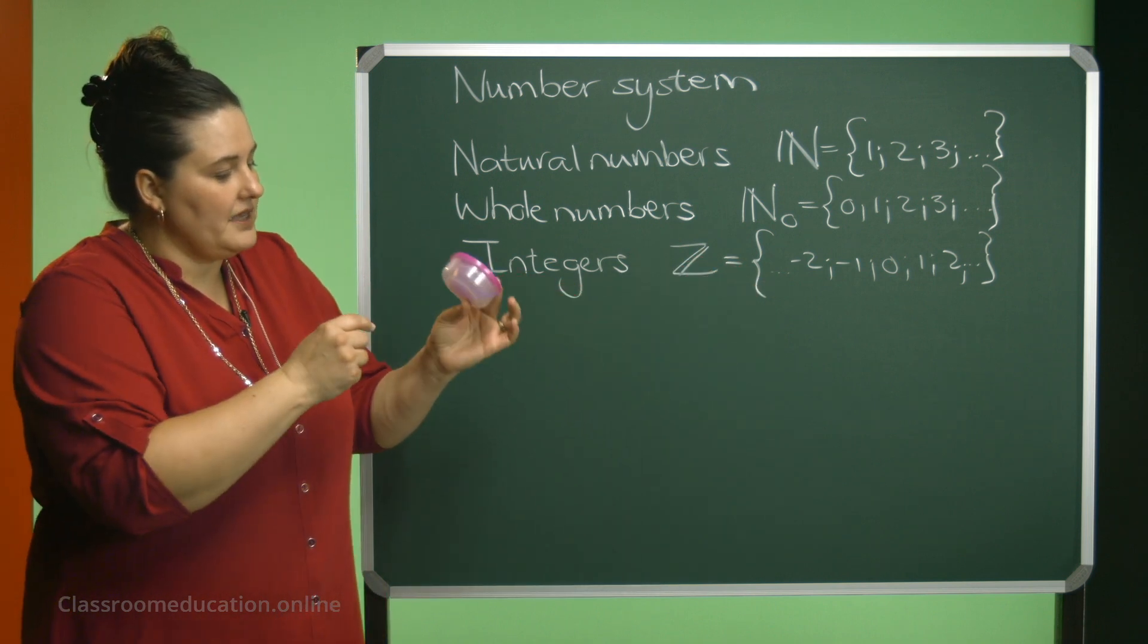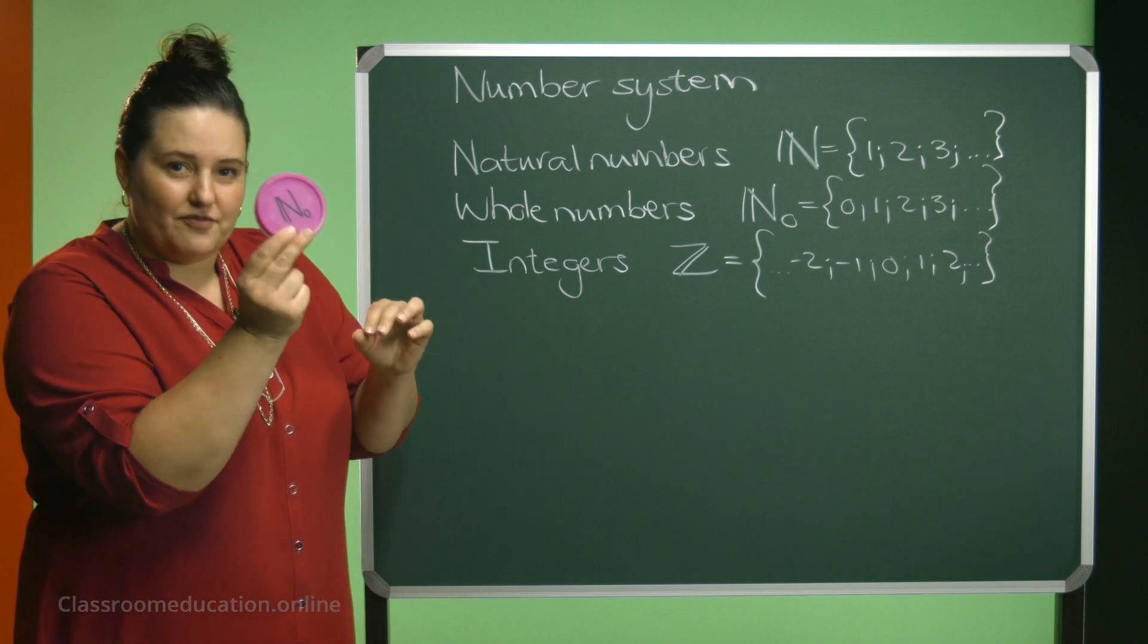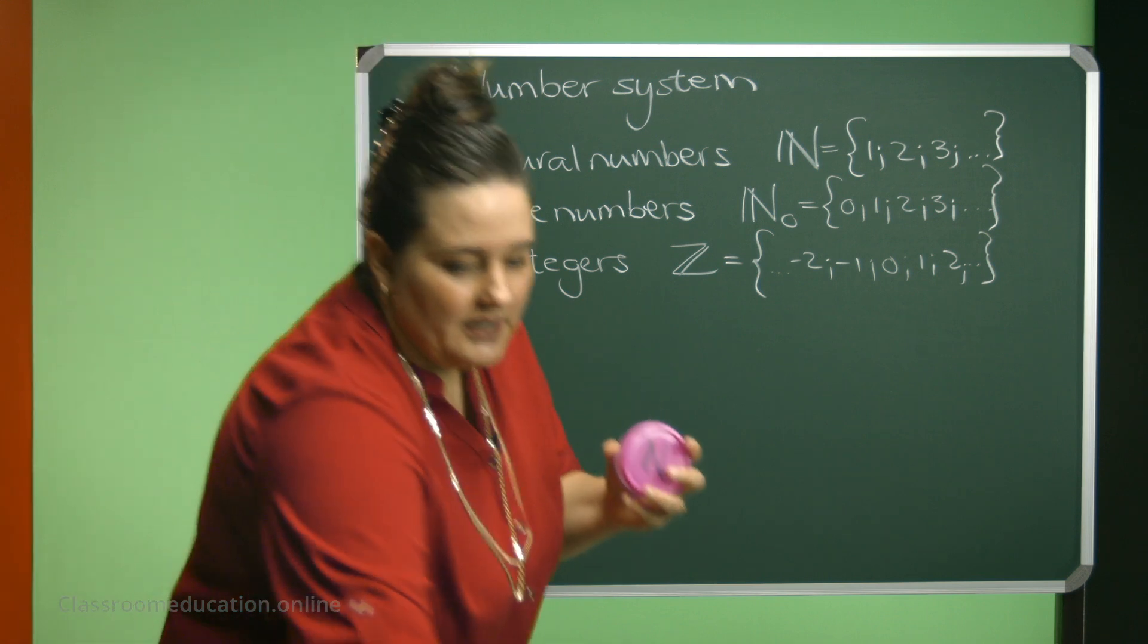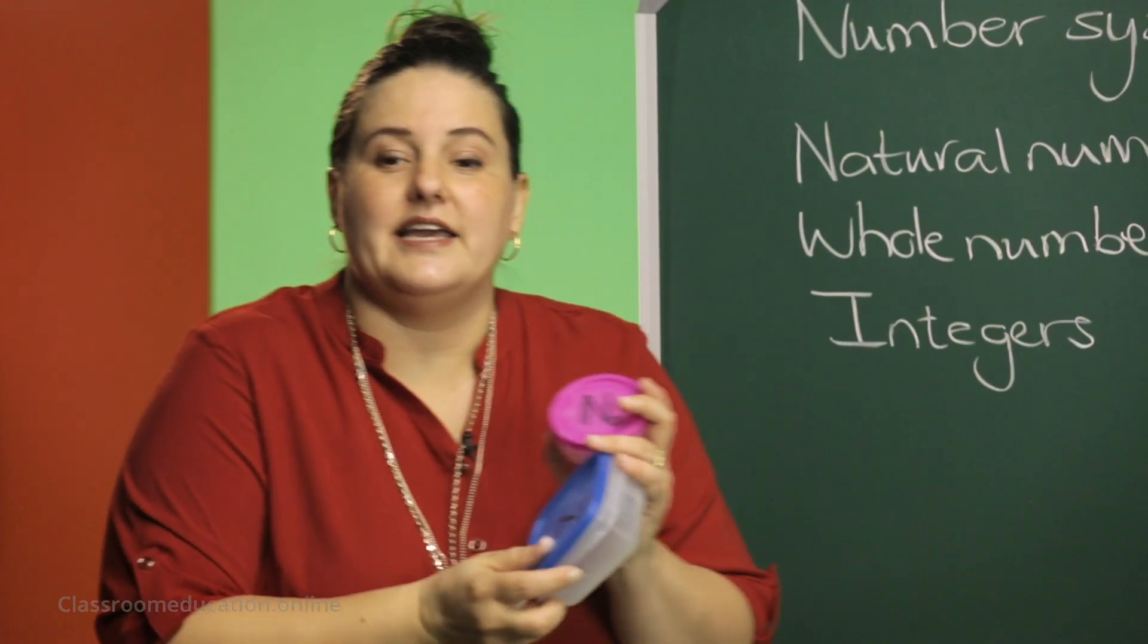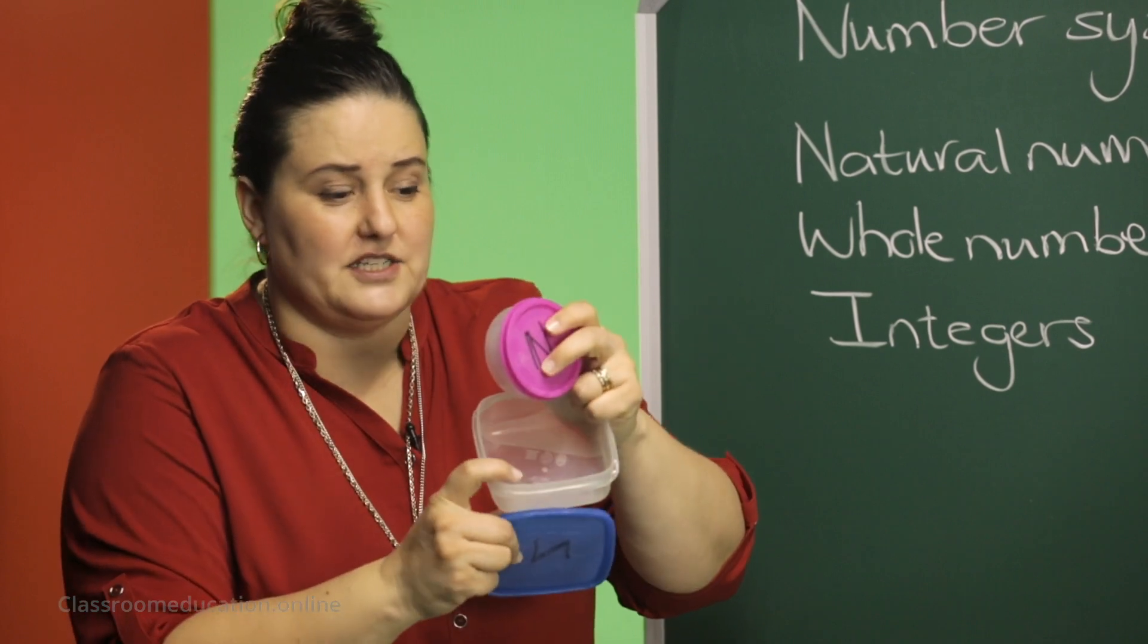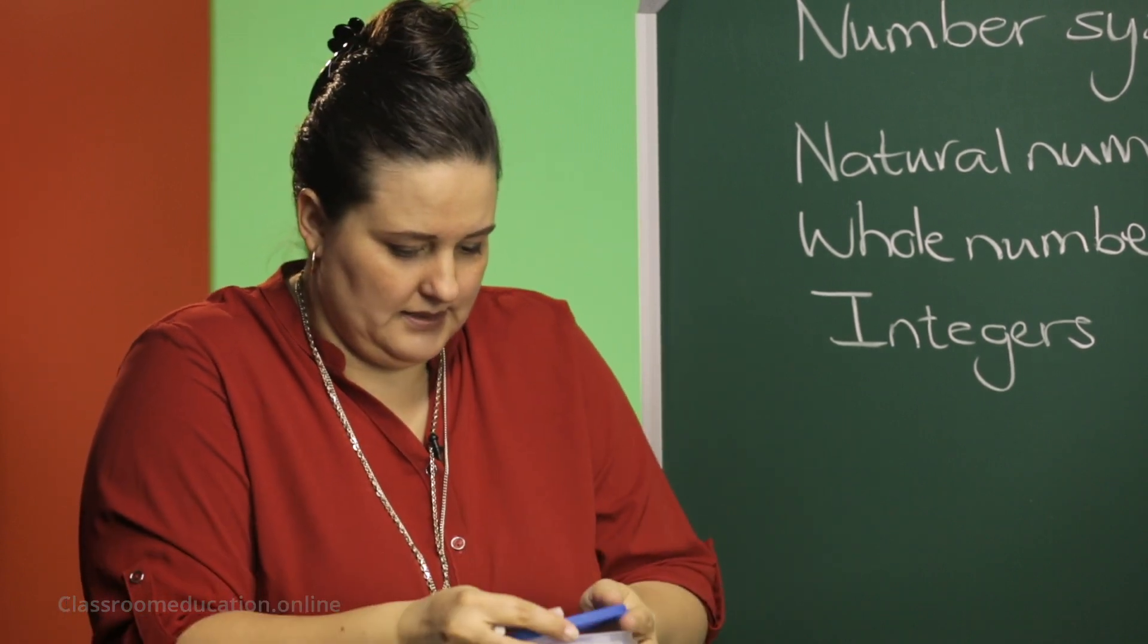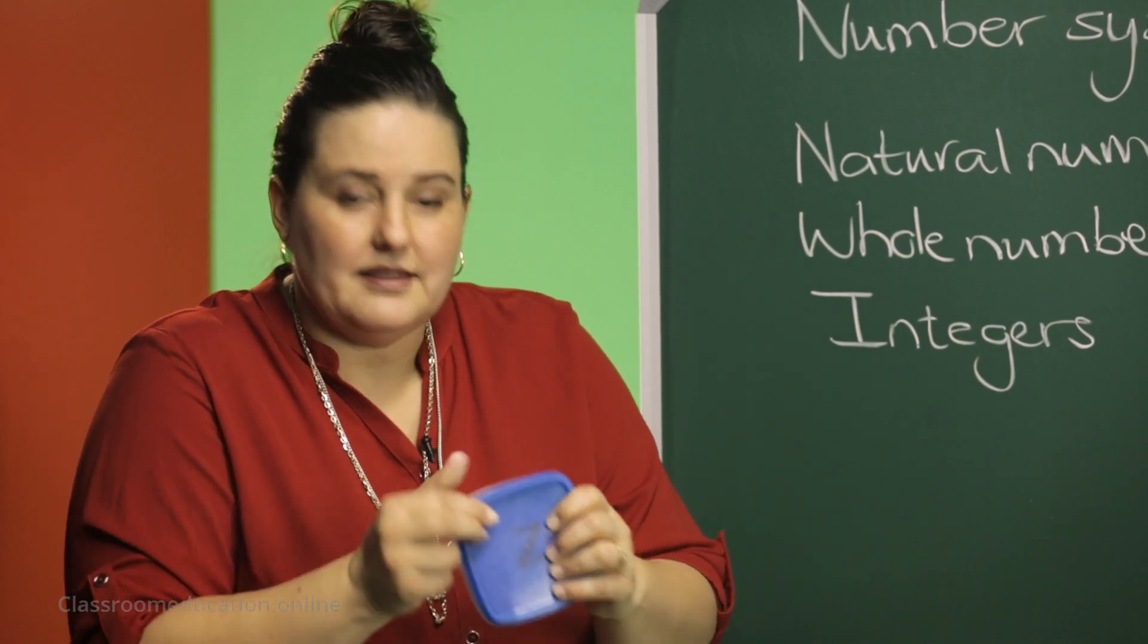So I have my natural numbers inside, then I have my whole numbers, and then I can get my set of integers. And my set of integers consists of my natural numbers and my whole numbers. They are in there.